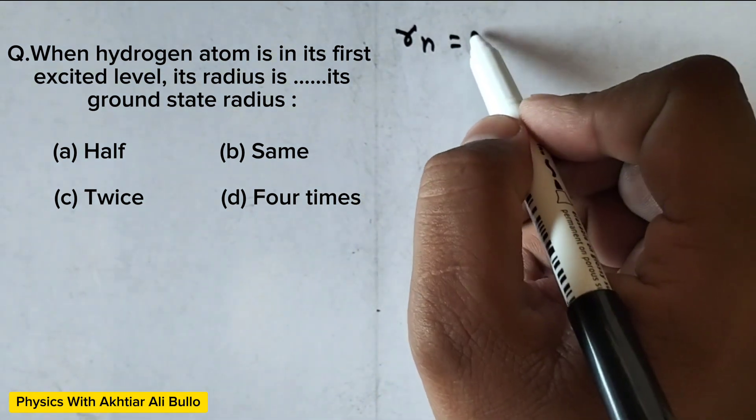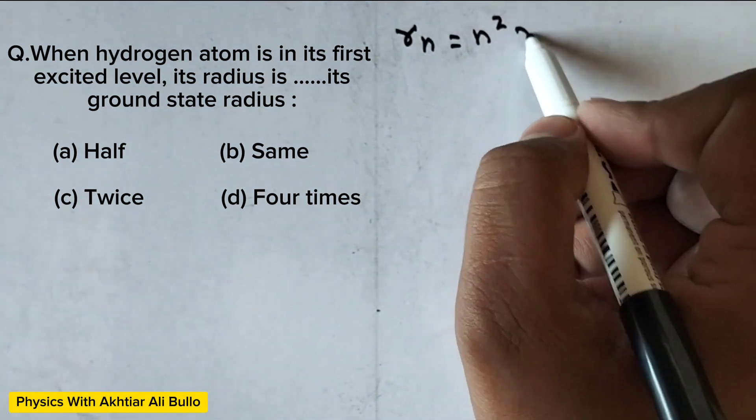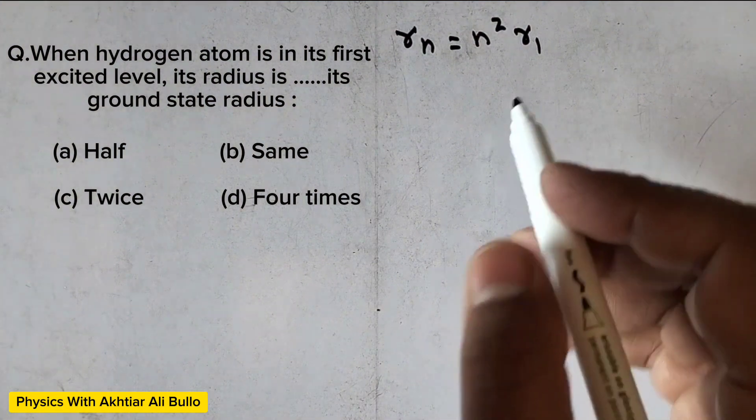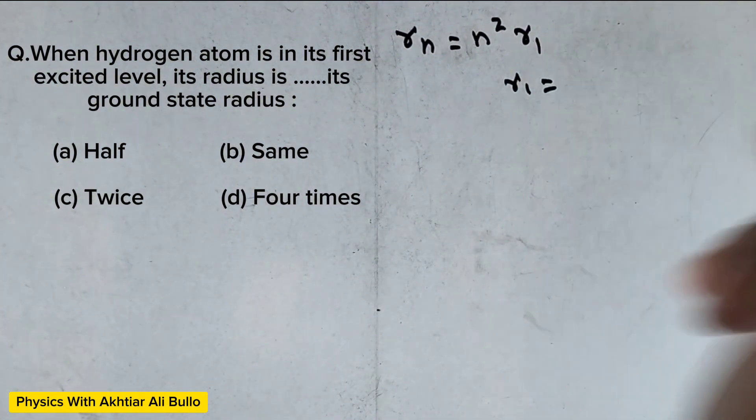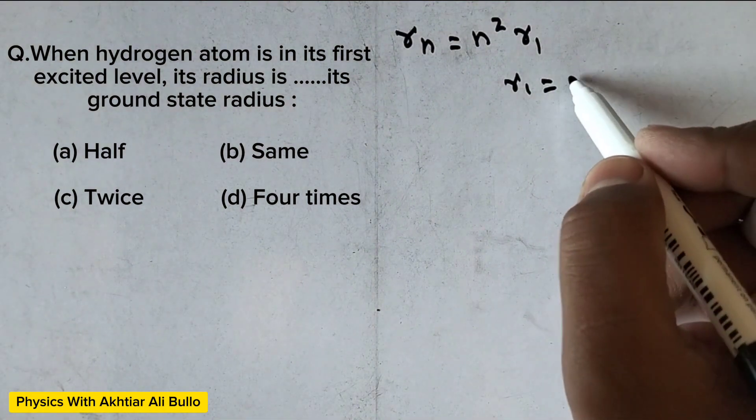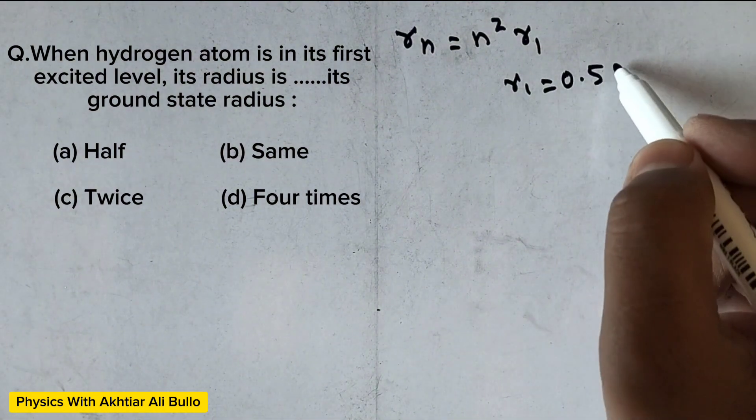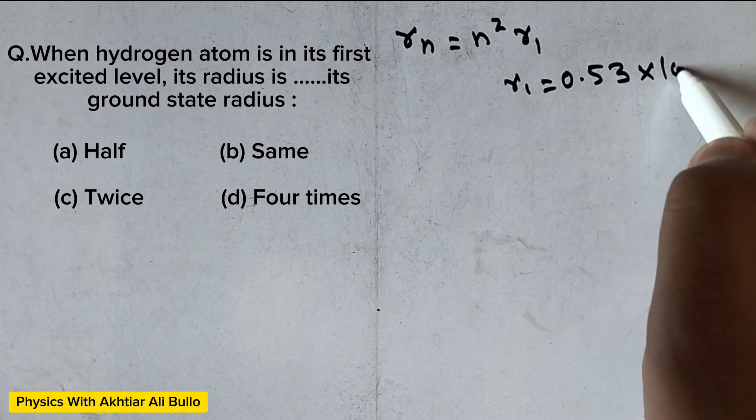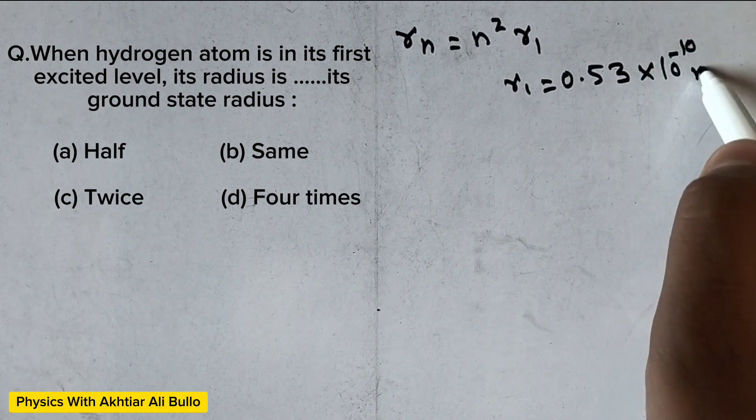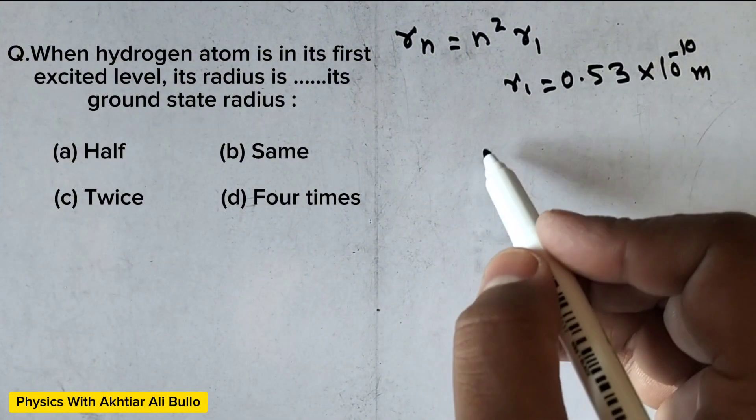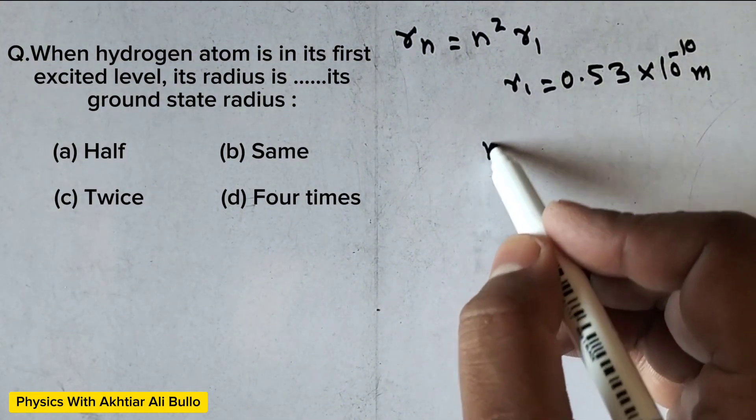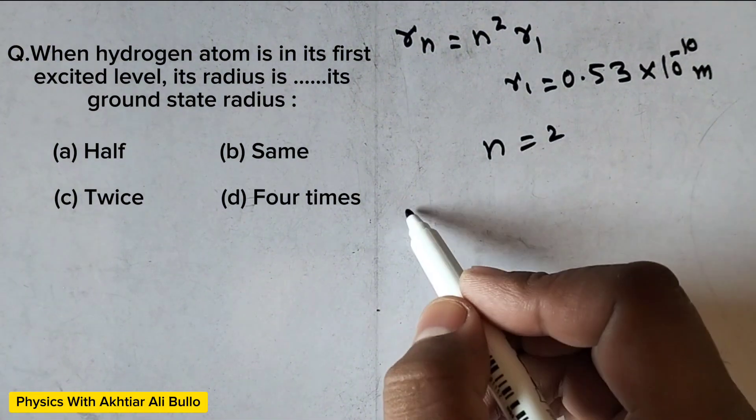is equal to n square into r1. Here r1 is the radius of first orbit of hydrogen which is 0.53 into 10 raised power minus 10 meter. So the value of first excited state means n is 2, so